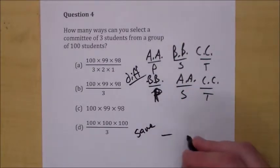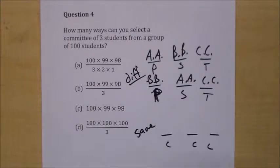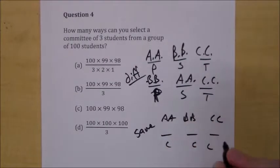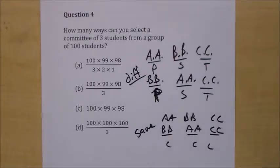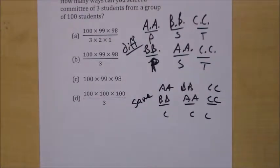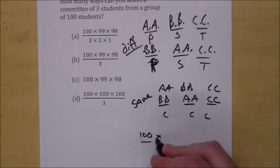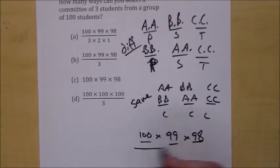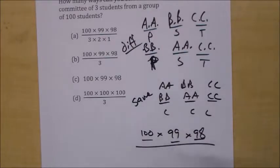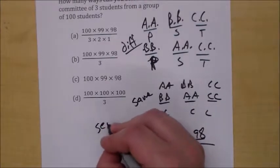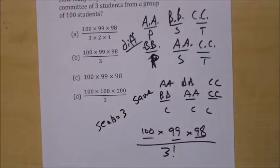But if they're all just committee members, then AA-BB-CC is the same as BB-AA-CC. So how do we handle this? We start with 100 × 99 × 98, which makes sense — 100 choices for the first seat, 99 for the second, 98 for the third. Then we ask: what do we have to divide that by? How many 'sames' are there? With three seats, you're going to have three factorial of the same arrangements.